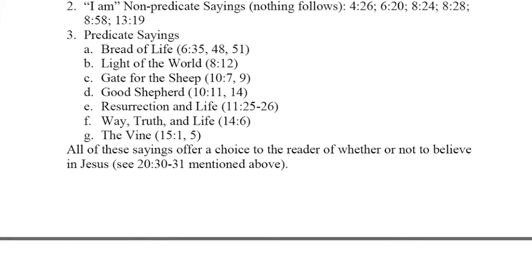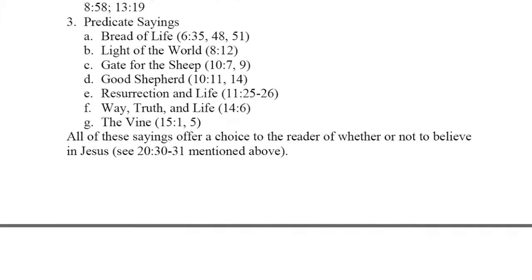Many times there is something that follows — these are called the predicate sayings. 'I am the bread of life. I am the light of the world. I am the gate of the sheep. I am the good shepherd. I am the resurrection and the life. I am the way, truth, and life. I am the vine.' All of these sayings offer a choice to the reader of whether or not to believe in Jesus.